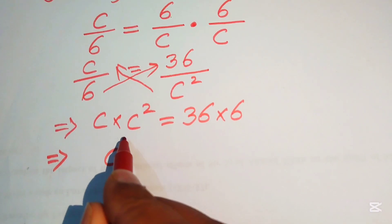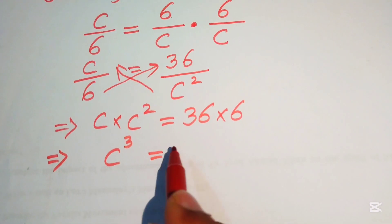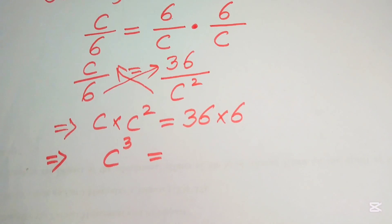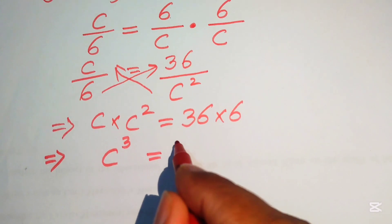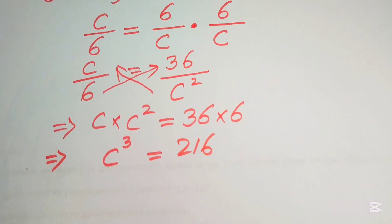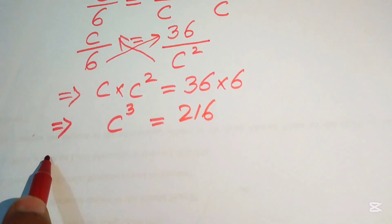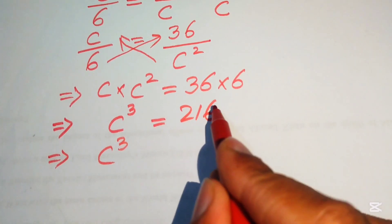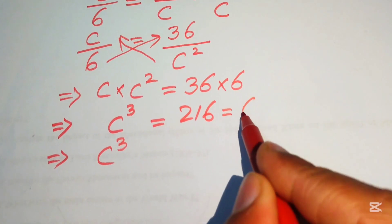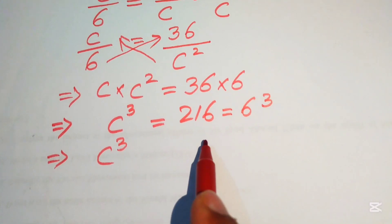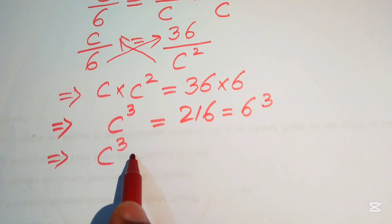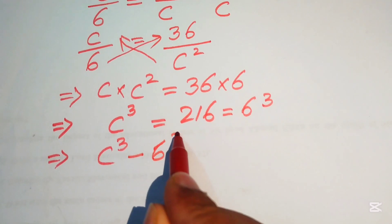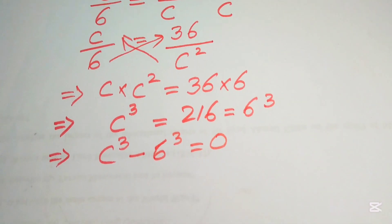C times C squared equals C cubed, and 6 times 36 equals 216. We move 216 to the left-hand side and rewrite 216 as 6 cubed. Moving 6 cubed to the left-hand side gives us C cubed minus 6 cubed equals 0.